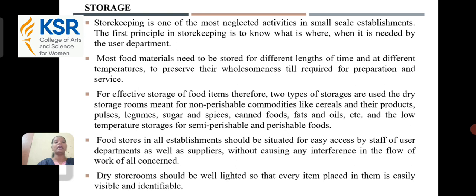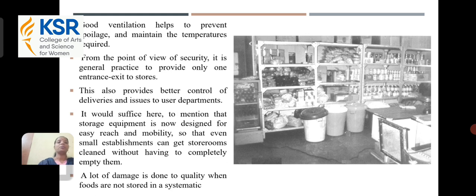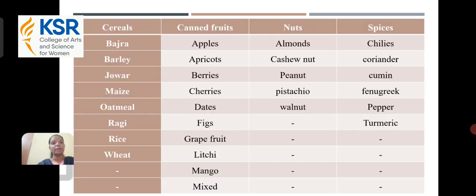Dry store rooms should be well-lit so that every item placed in them is easily visible and identifiable. Good ventilation helps to prevent spoilage and maintain the required temperature. From the point of view of security, it is general practice to provide only one entrance and exit to stores. This also provides better control of deliveries and issues to the user department. Storage equipment is now designed for easy reach and mobility so that small establishments can get storerooms clean without having to completely empty them. A lot of damage is done to quality when foods are not stored systematically. These are examples of food stored in a storage area.